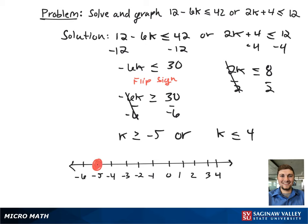On our number line, we notice that since k is greater than or equal to negative 5, it's a closed circle from negative 5 to infinity. And since k is less than or equal to 4, it's a closed circle from 4 to negative infinity. This actually happens to be all real numbers. So in interval notation, this looks like negative infinity to infinity.